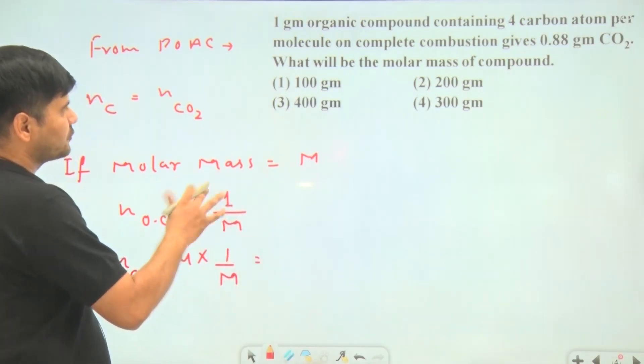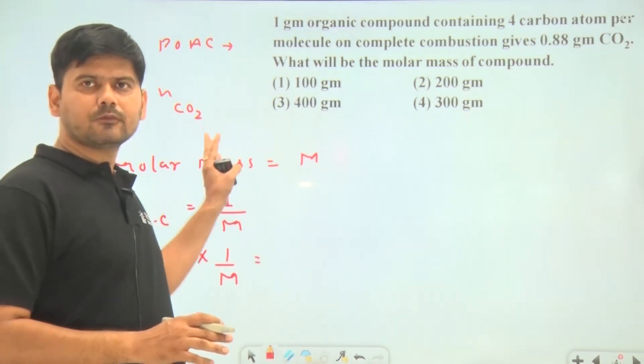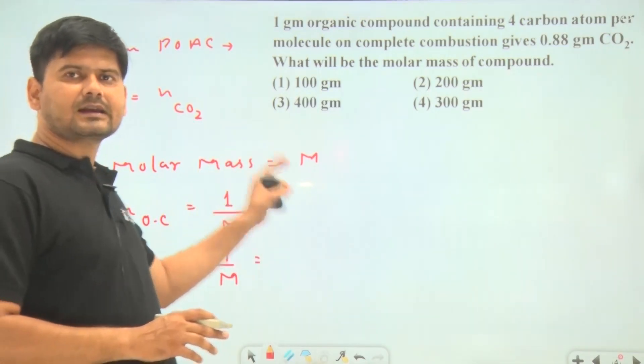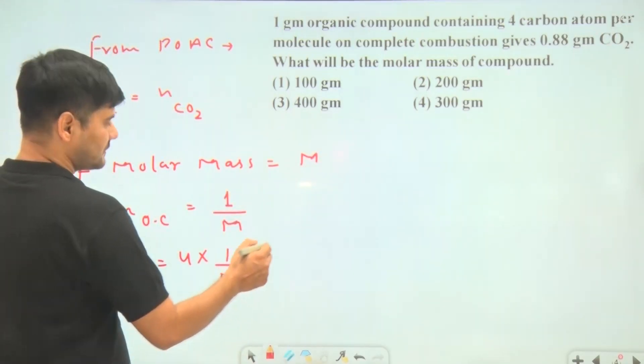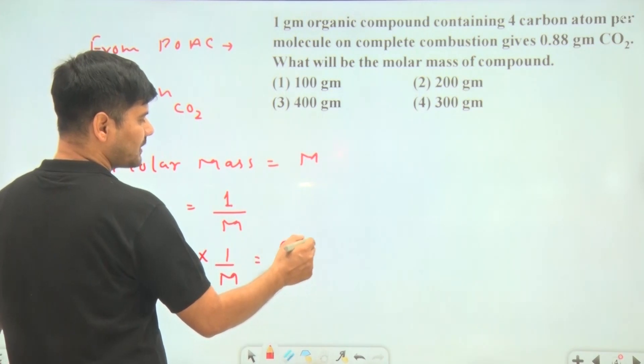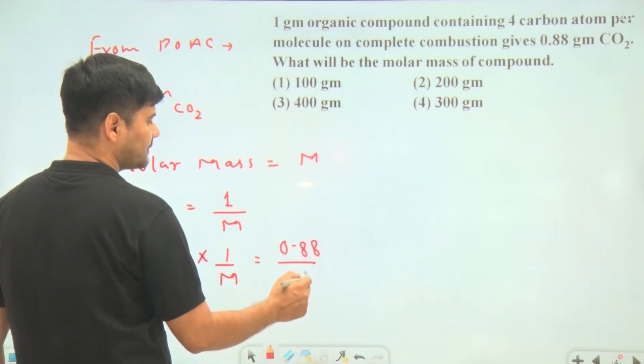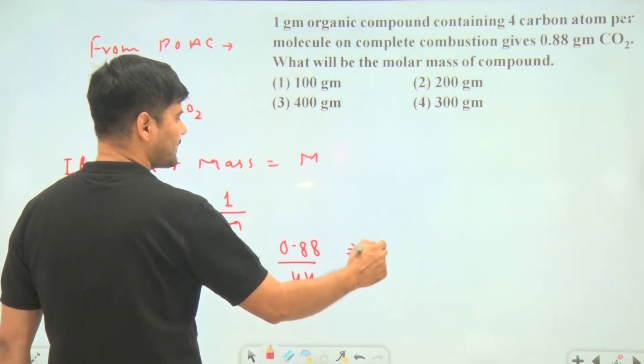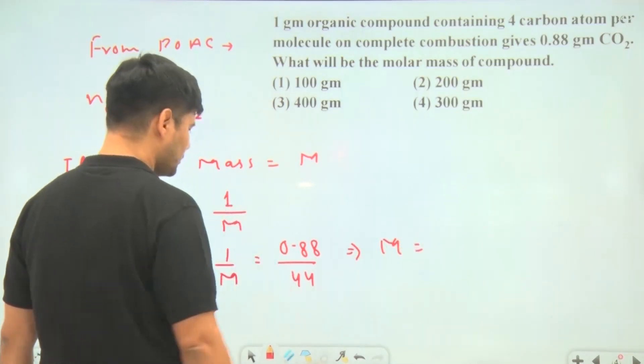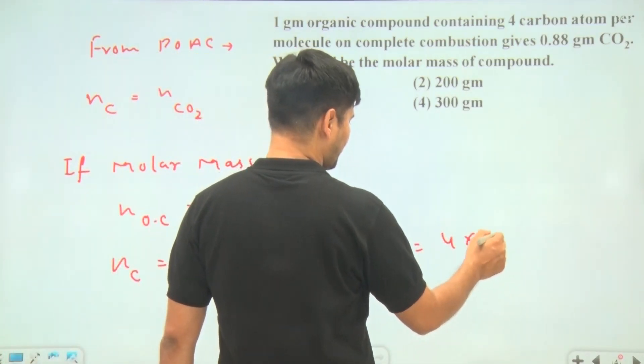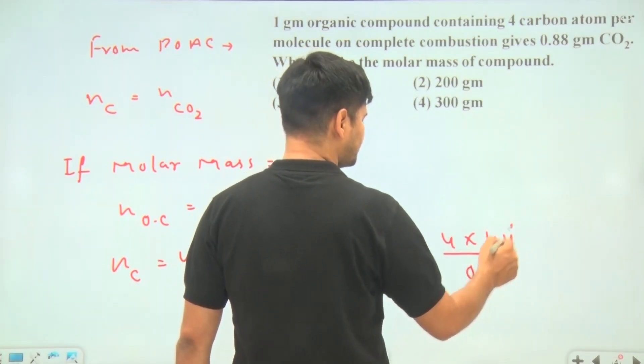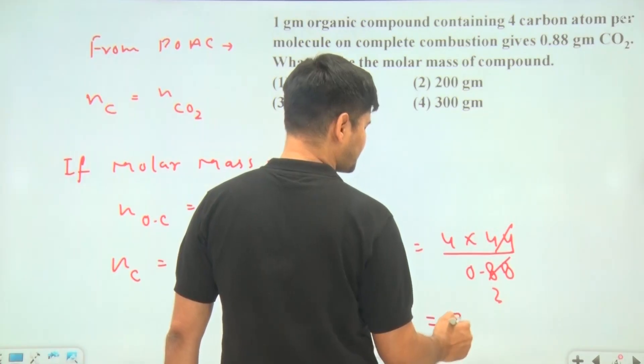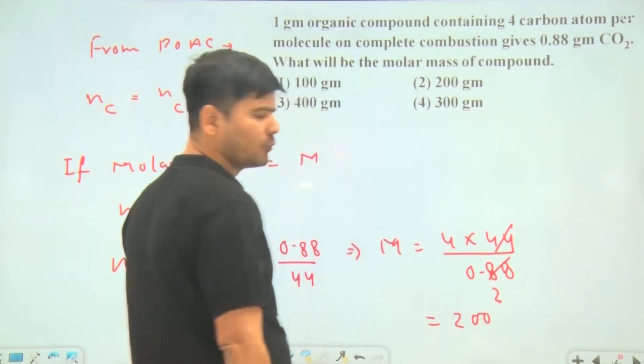From POSC, moles of carbon atoms equals moles of CO2. Moles of CO2 equals weight divided by molar mass of CO2, which is 0.88/44. Solving this equation: 4/M = 0.88/44, so M equals 4 times 44 divided by 0.88.